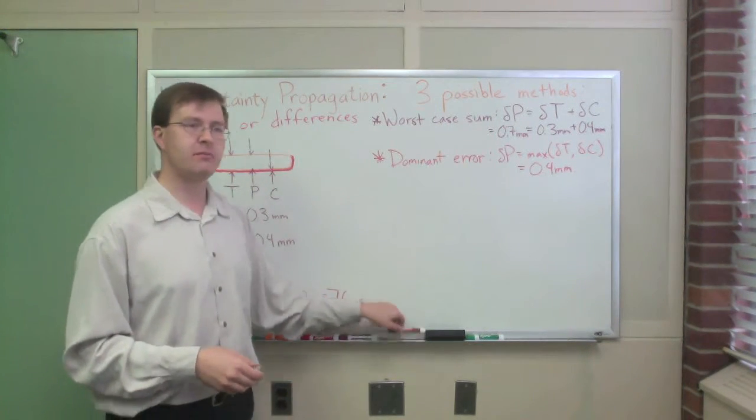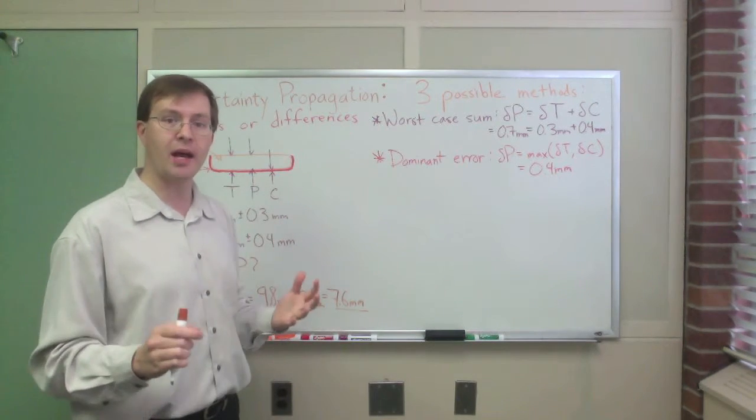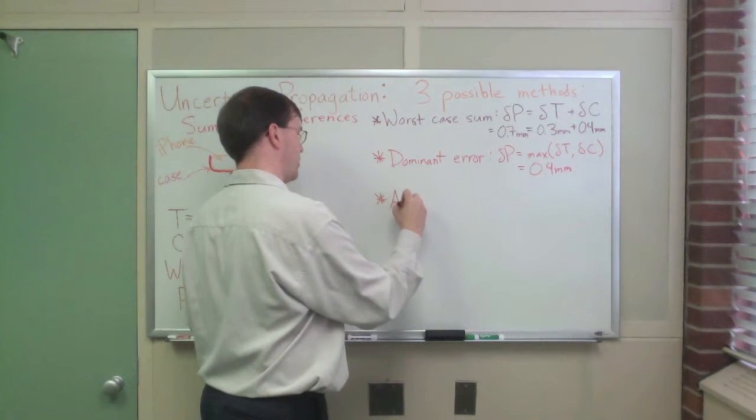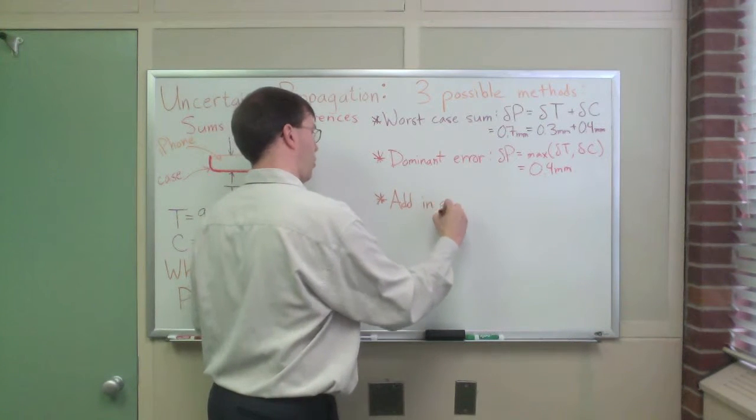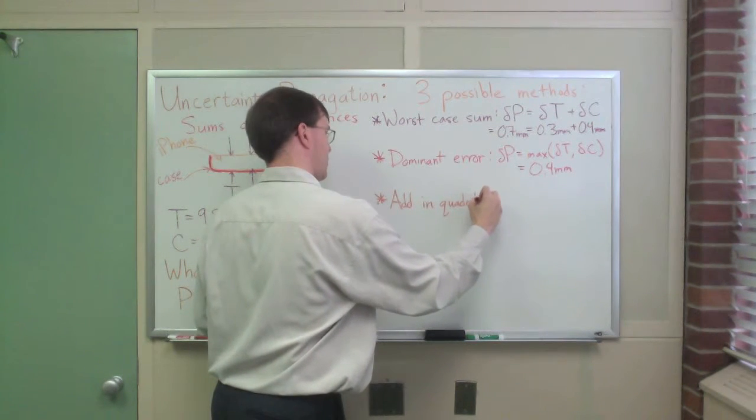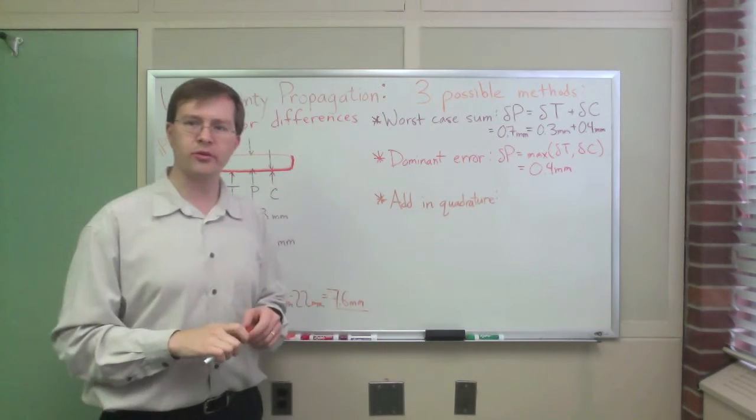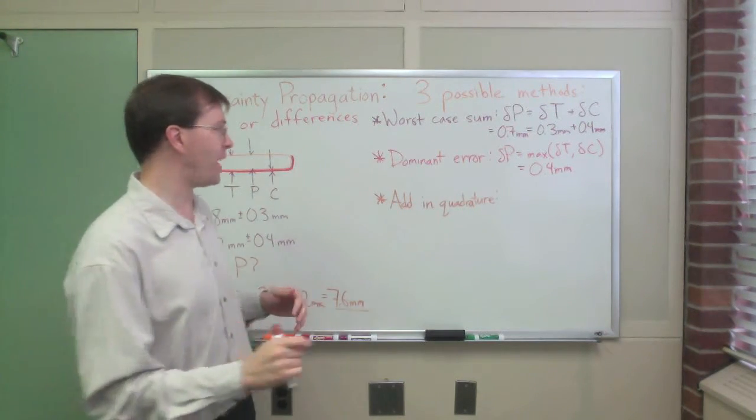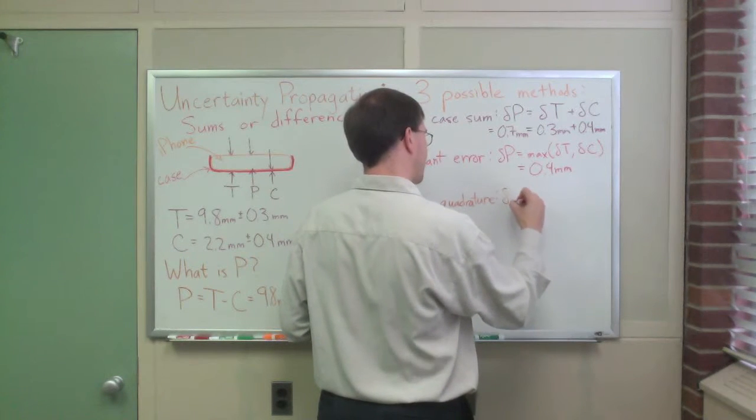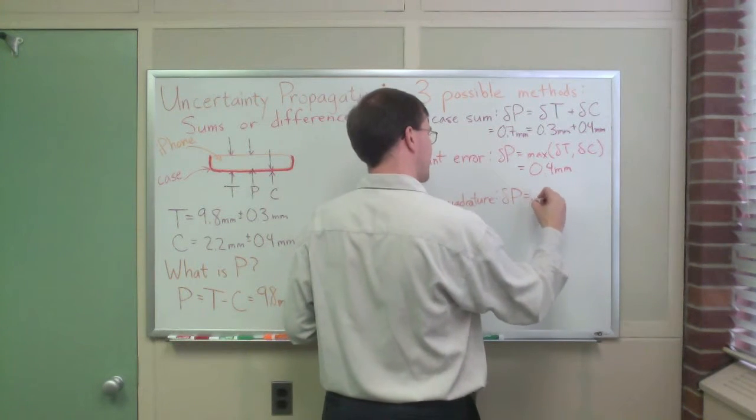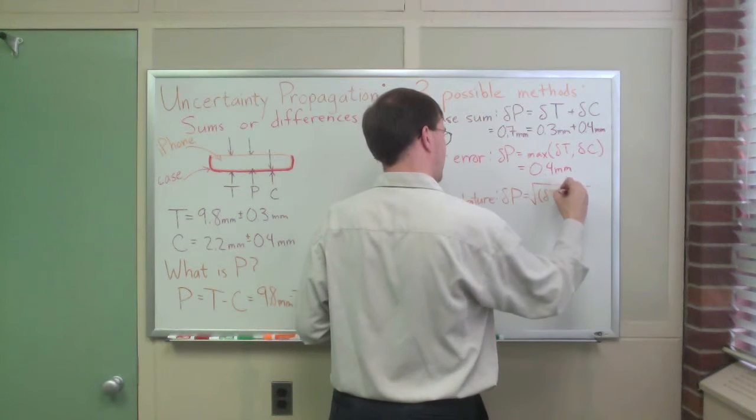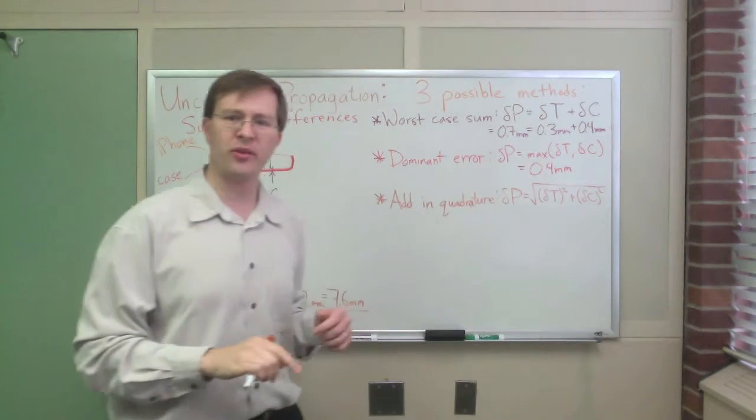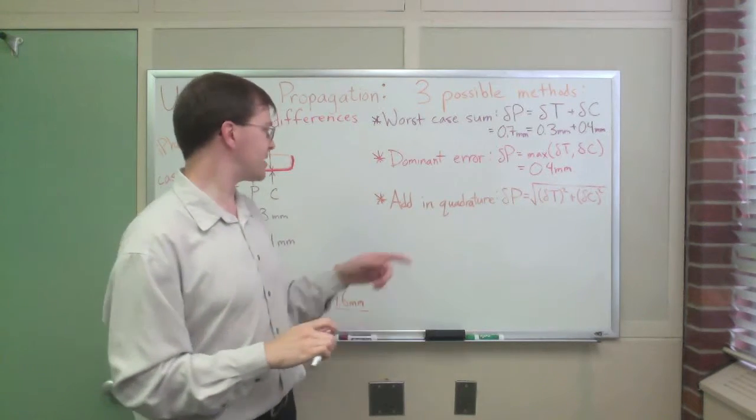But my favorite method for calculating uncertainty, and the one that's the most reliable, if you truly do have independent random errors, is what's called adding in quadrature. Quadrature. Fancy name. Adding in quadrature, quad refers to a square, and we're going to add squares. This is basically a Pythagorean theorem idea. The idea is that the uncertainty in the phone thickness is the square root of delta t squared plus delta c squared. This is exactly the Pythagorean theorem.